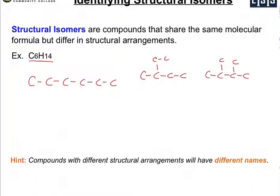Now, so that's what structural isomers are. You have the same molecular formula but you have different structures. And I'll show a hint down here: one way to verify that you have a different structural arrangement is to name the compounds, and if there's a different structural arrangement, you'll have a different name for the compound.